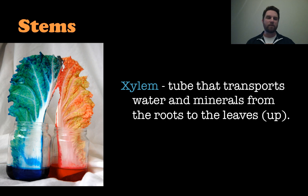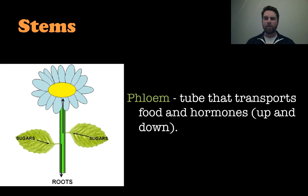If you've ever done that experiment where you stick a piece of celery or lettuce into different colors of water, you'll see that the dye travels up because the xylem is carrying that water. The phloem is a little bit different — that tube goes up and down, transporting food in the form of sugar and hormones up and down the plant. So the phloem can go up and down; the xylem can only go up.